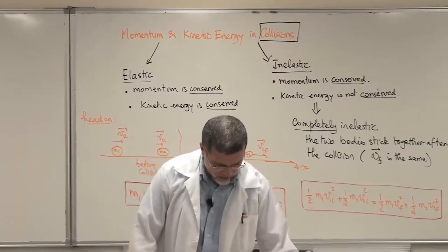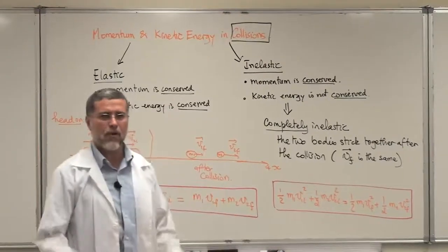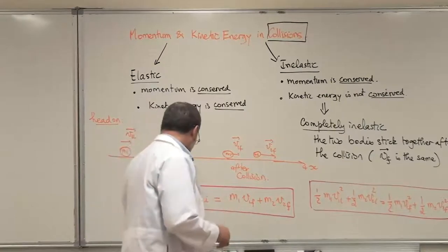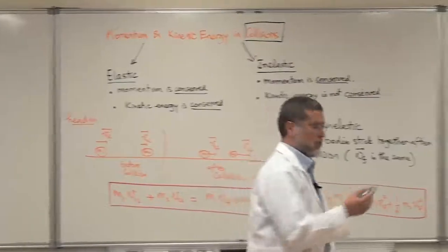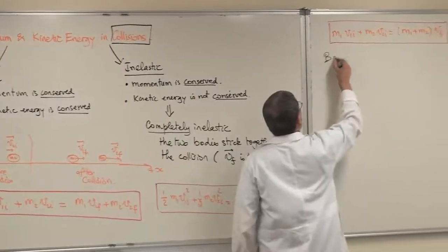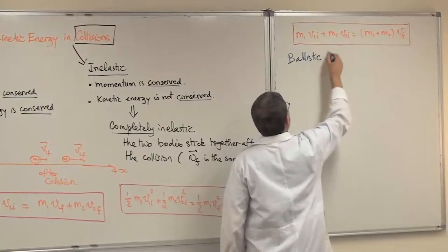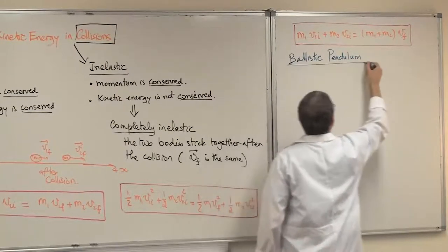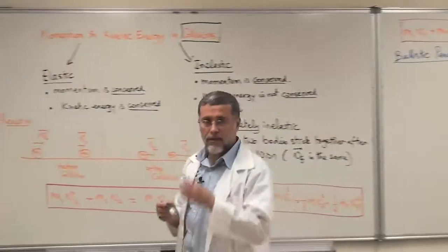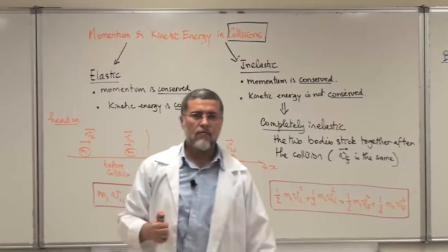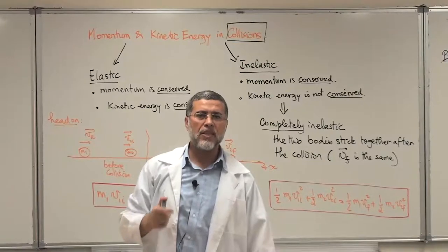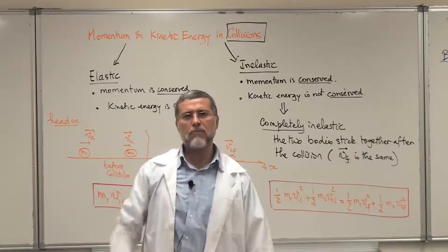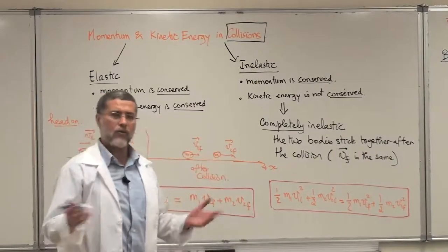Now let's do an example. It is called the ballistic pendulum, and this is a very important problem because it is used to determine the velocity or speed of bullets. There will be an experiment in the lab where you will use a ballistic pendulum, so this is a kind of introduction to that.